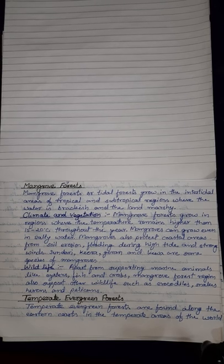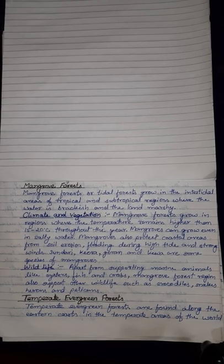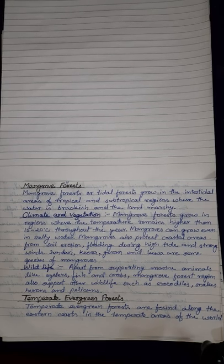Mangroves can grow even in salty water. Mangroves also protect coastal areas from soil erosion, flooding during high tide, and strong winds. Sundri, Keora, Goran, and Kewa are some species of mangroves. Apart from supporting marine animal life like oysters, fish, and crabs, mangrove forest regions also support other wildlife such as crocodiles, snakes, herons, and pelicans.